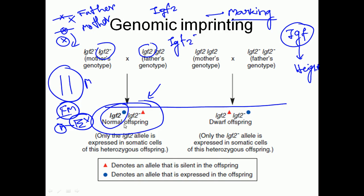The marking is: the gene that you get from your father, you should express that; but the gene you get from your mother, you should not express that. So the gene IGF-2 minus — I get it from mother — so I will not express this gene. But I get IGF-2 from father, so I will express that gene. As IGF-2 is expressed, it gives us normal height, so the offspring will be of normal height.